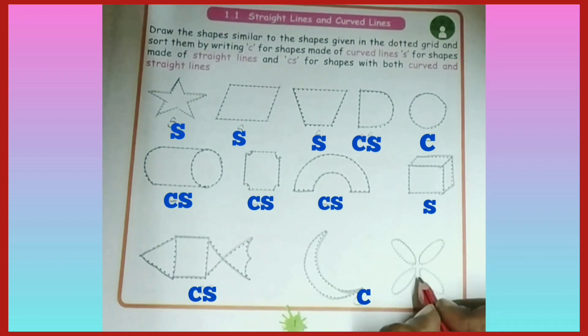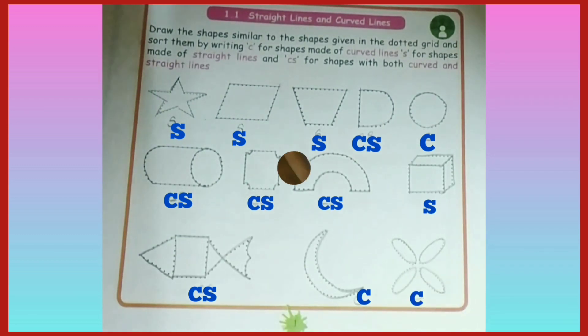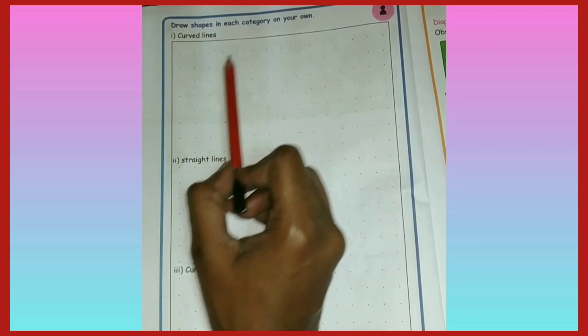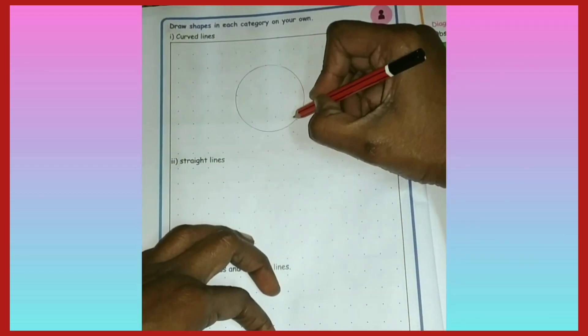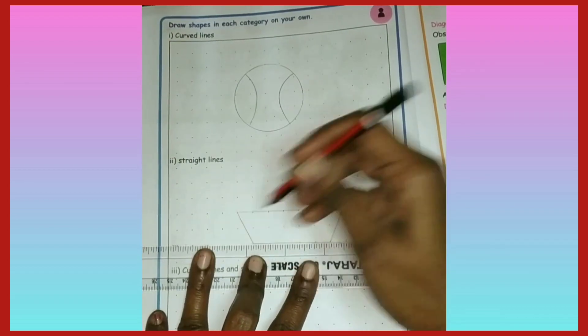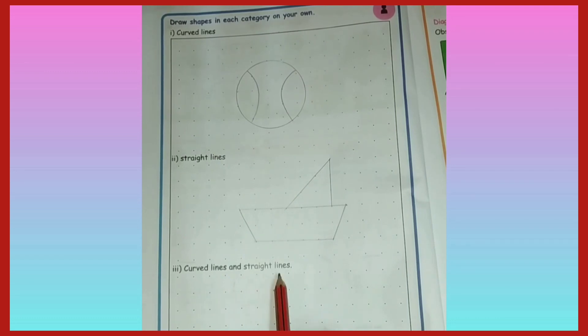Let us draw the shapes in each category. First, we have curved lines - a ball. Next, straight lines. Next, curved lines and straight lines.